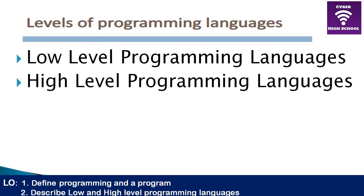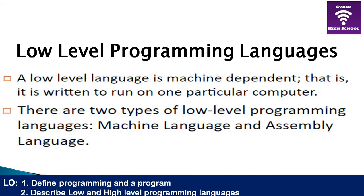Computers only understand binary, which is the machine language, and this language is only written in zeros and ones. There are actually two low-level languages: the machine language, which is the binary or machine code, and the assembly language, which is another low-level programming language.